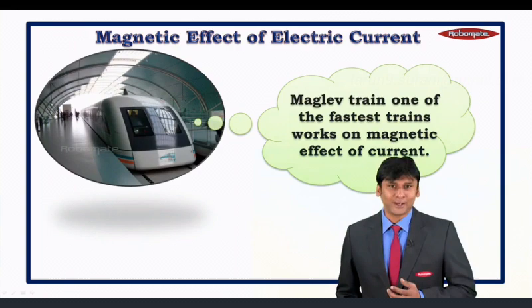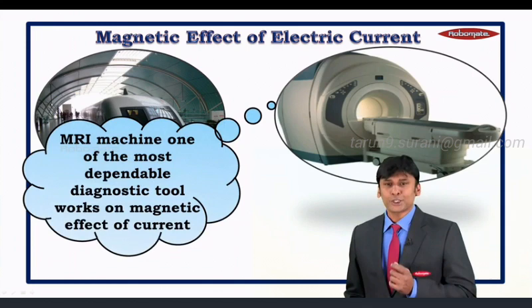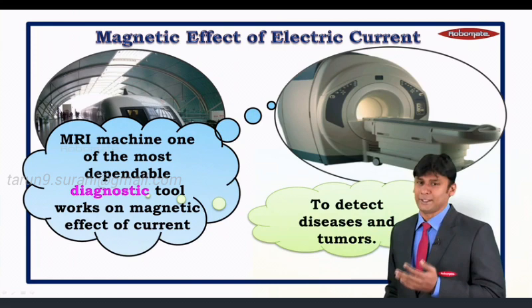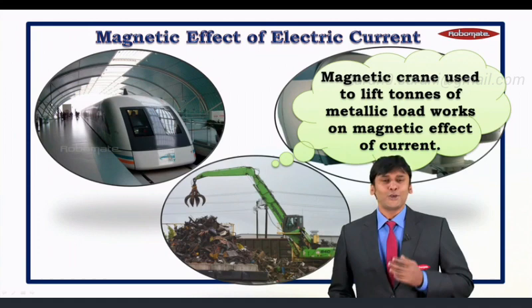The MRI machine, one of the most dependable diagnostic tools, also works on the magnetic effect of electric current. 'Diagnostic' means to detect diseases and tumors. Additionally, the magnetic crane, used to lift tons of metallic load, also works on the magnetic effect of electric current.